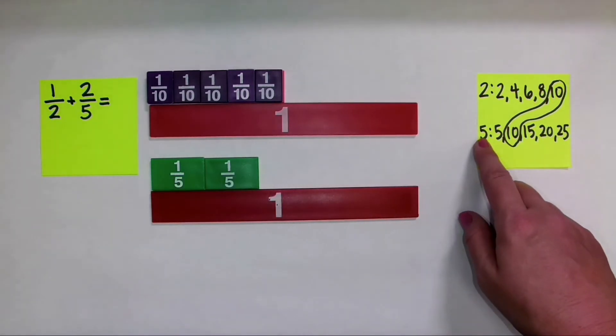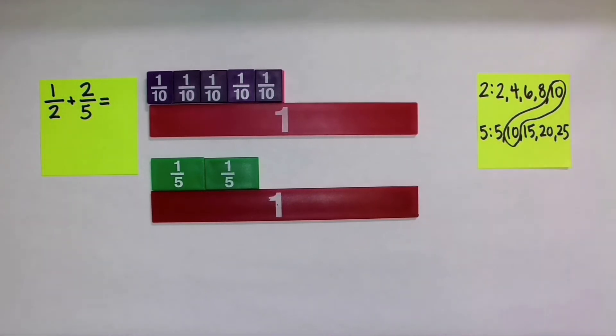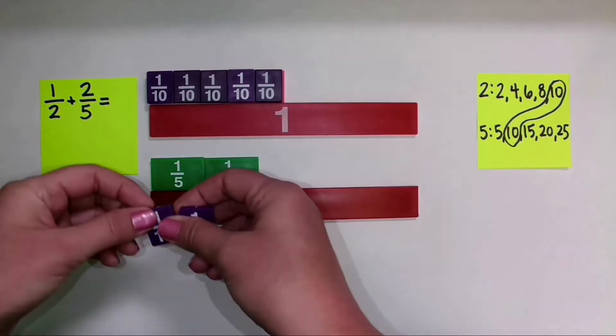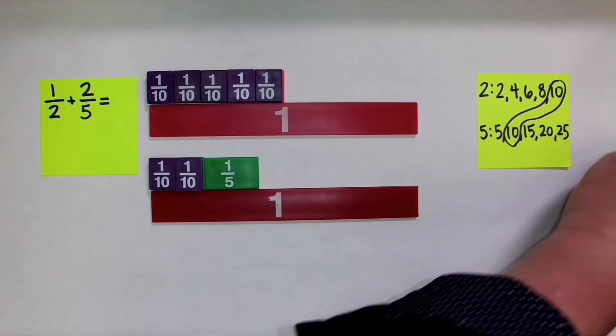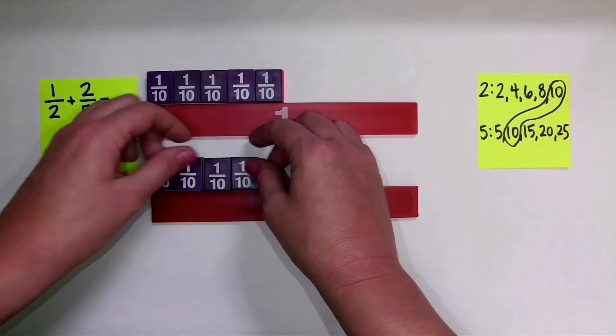Now I have these two 1 fifth pieces. For each of the 1 fifth pieces, I need to change that to have 2 tenths. So this 1 fifth piece is equivalent to 2 tenths, and this 1 fifth piece is also equivalent to 2 tenths.